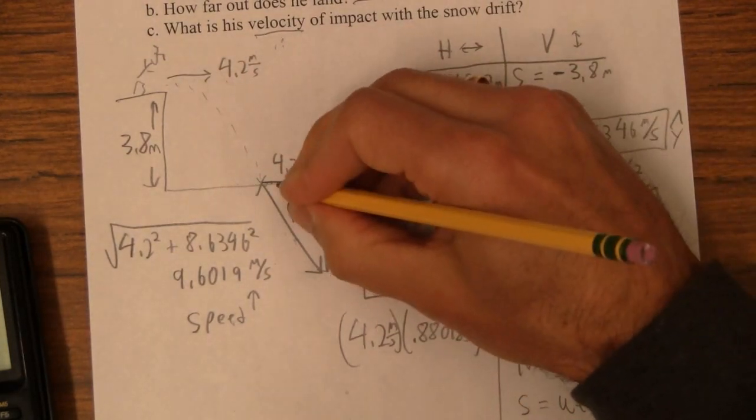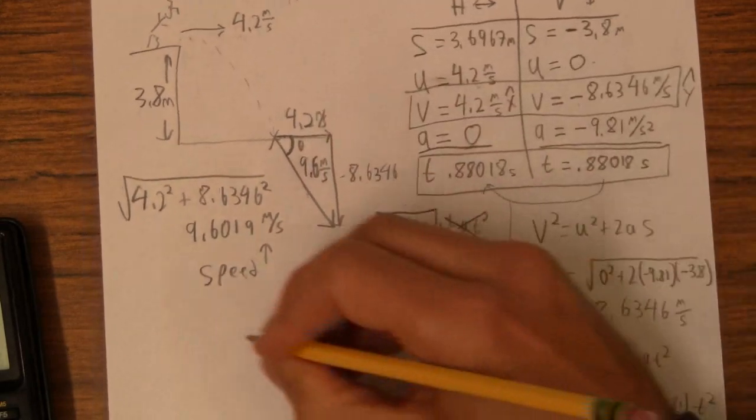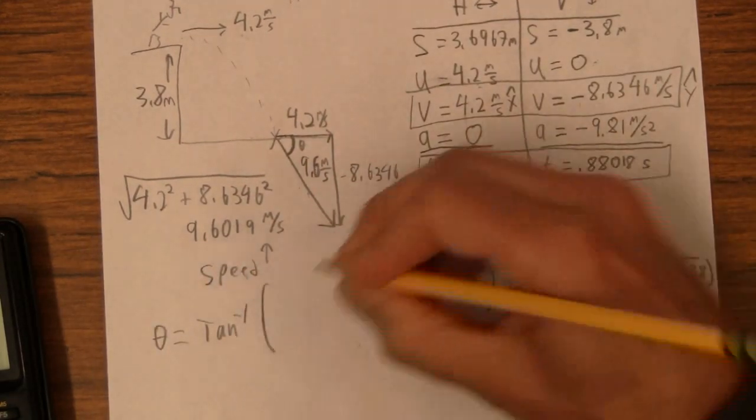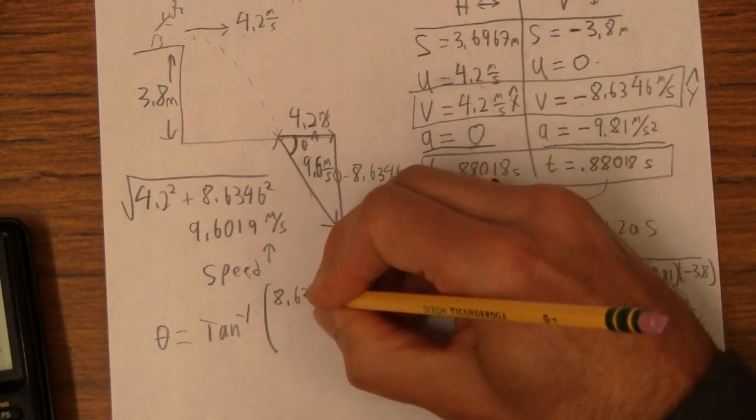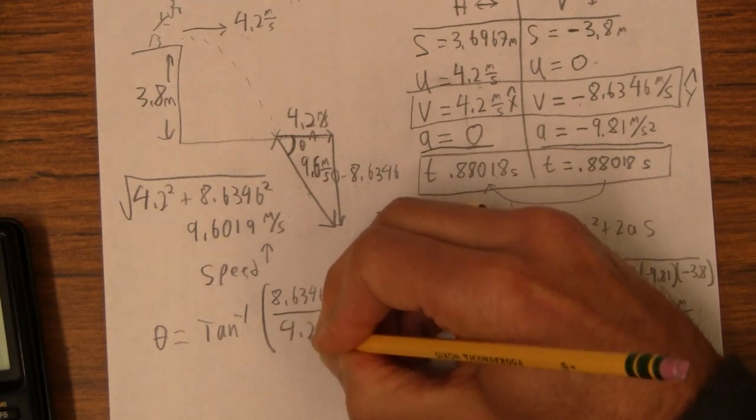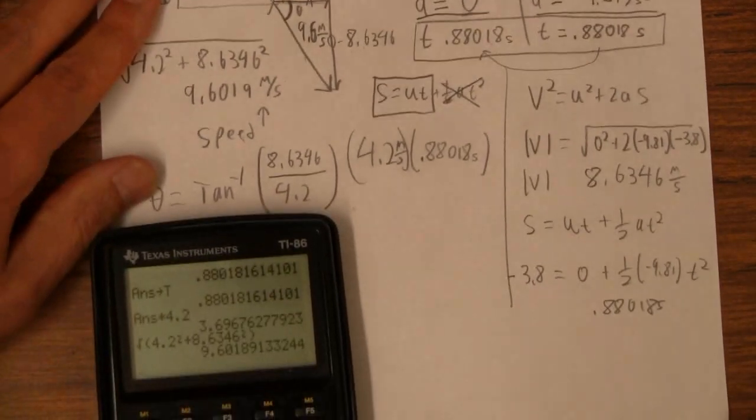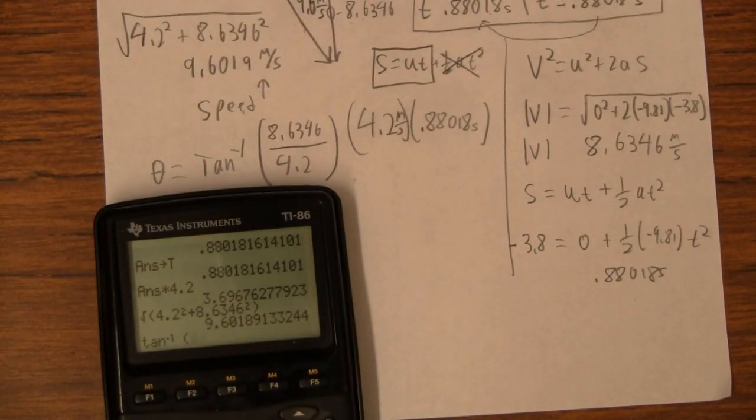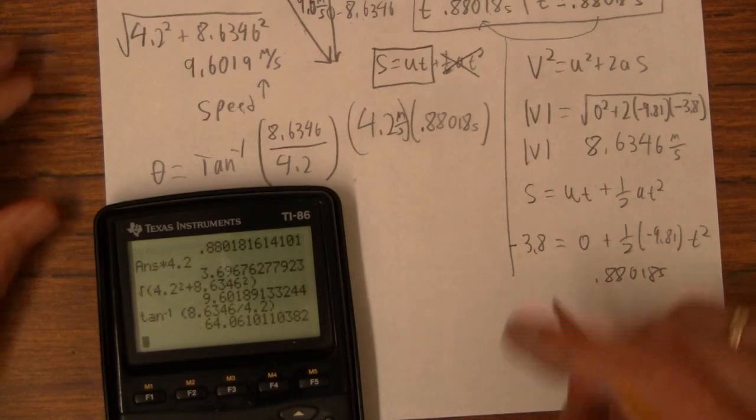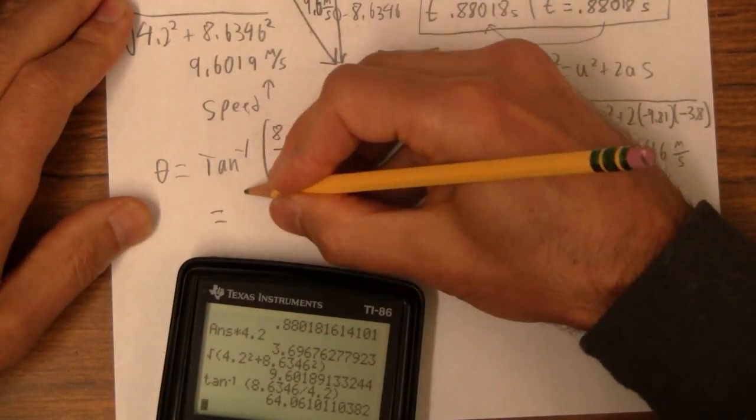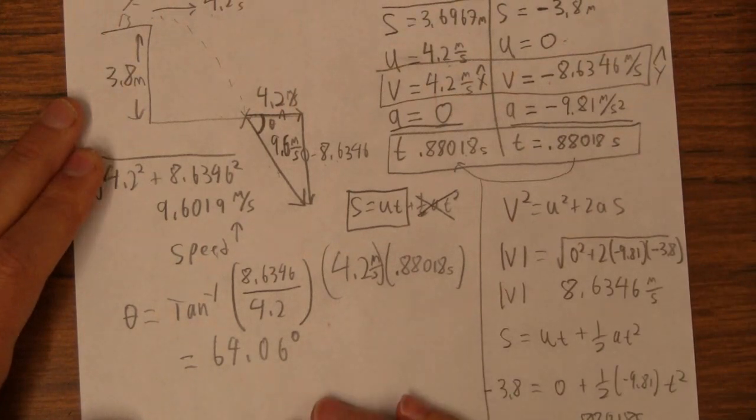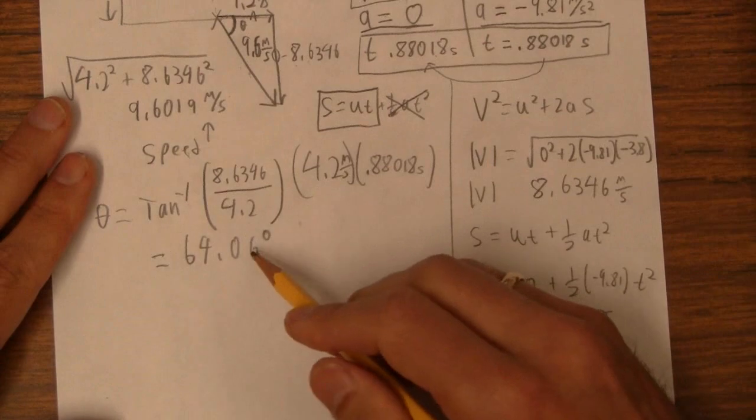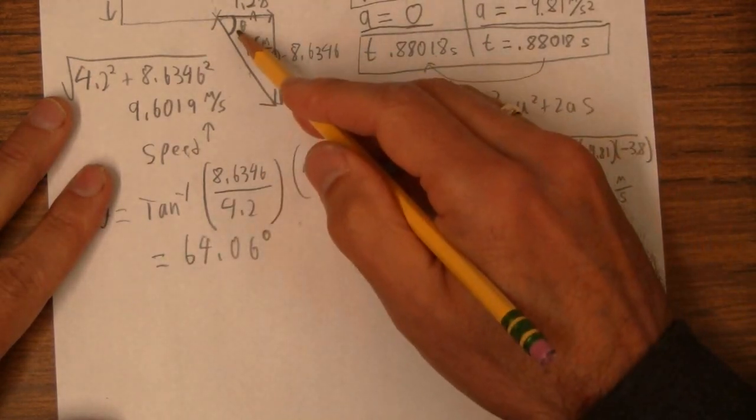And then if we want to make that speed into a velocity, we've got to find that angle. So that angle right there is the inverse tan of opposite over adjacent. This is the opposite side, adjacent side, right? So 8.6346 over 4.2. So the inverse tan of 8.6346 divided by 4.2, and that's 64.06 degrees. So if I had to give this as an angle magnitude vector, which is almost always what they want, I would say that the velocity is 64 degrees below horizontal.